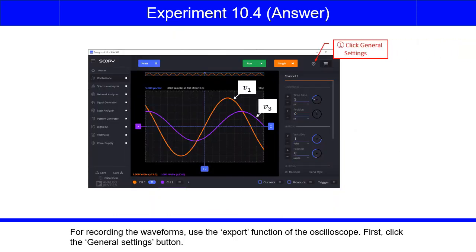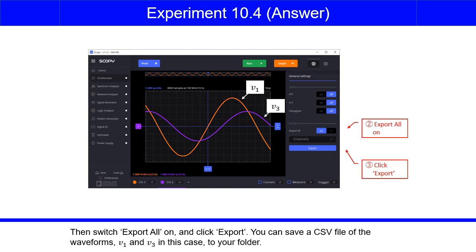For recording the waveforms, use the export function of the oscilloscope. First, click the general settings button. Then switch export all on and click export. You can save a CSV file of the waveforms, V1 and V3 in this case, to your folder.